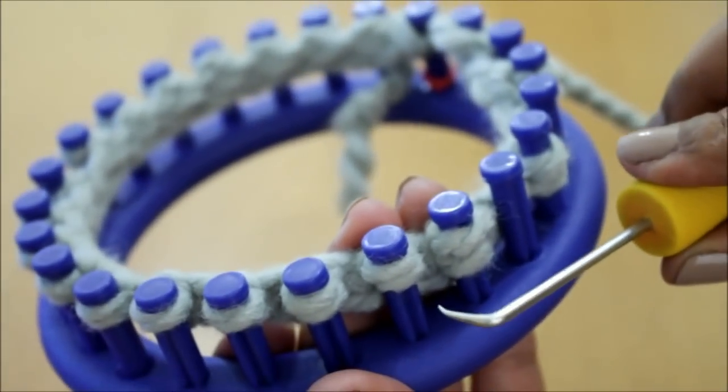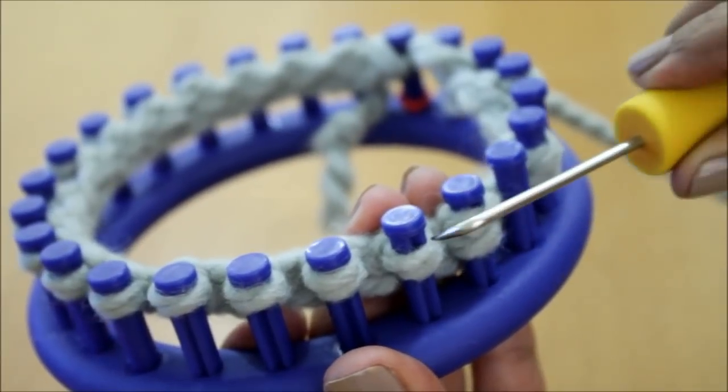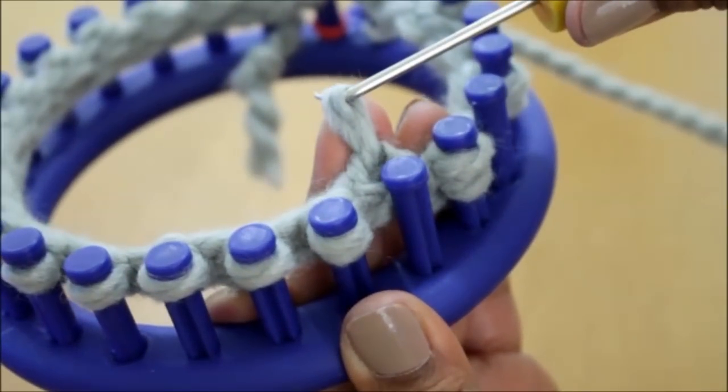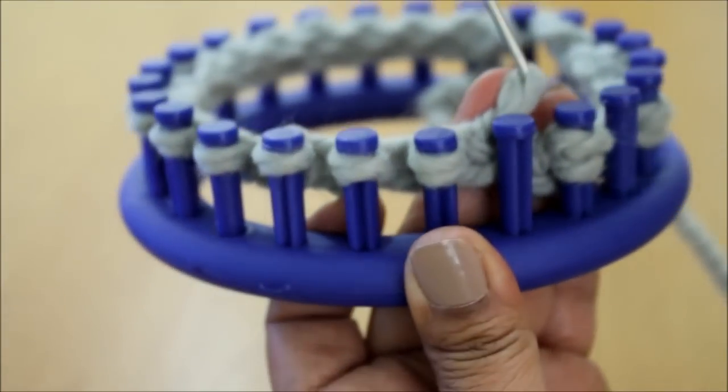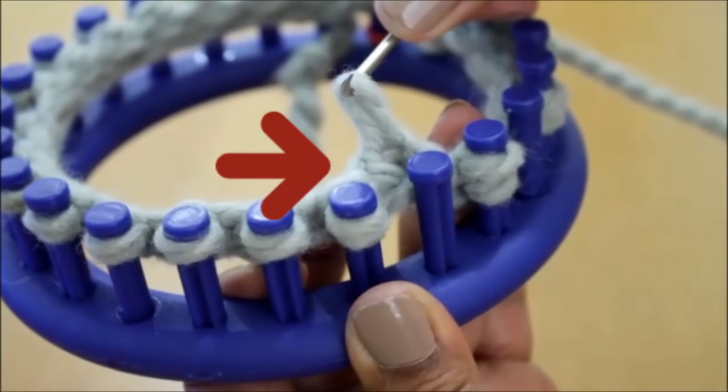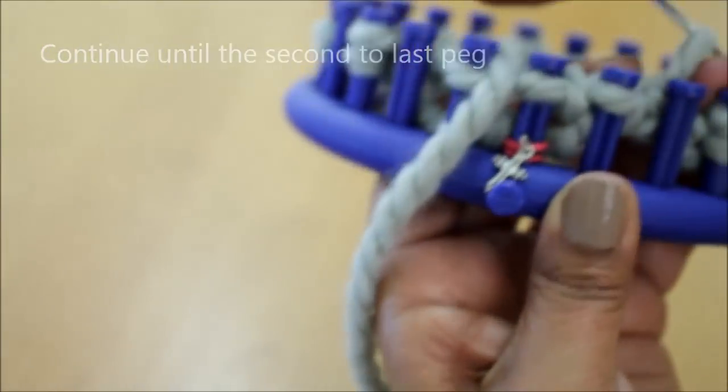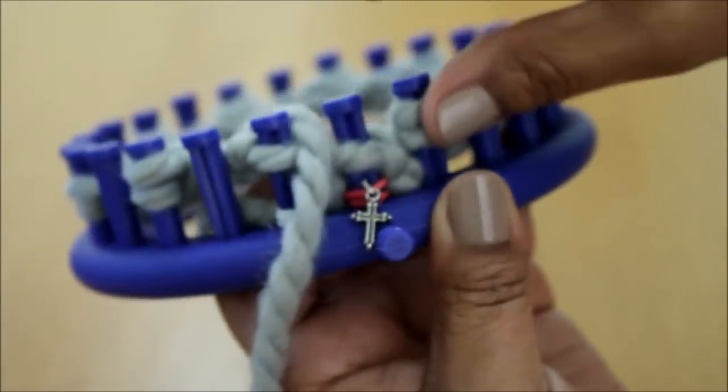So let me show you up close. You take the next loop off the peg and you can see the cross right there of the yarn. So you're going to unravel it so it looks like this. And you're going to take it to the next peg. And you're going to keep doing that until you get to the second to last peg.